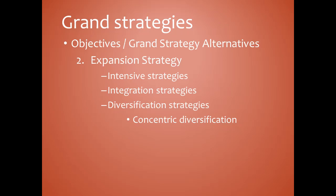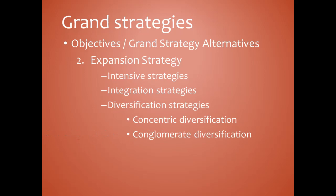In diversification, there are two types. First, concentric diversification: adding new but related businesses. It involves acquisition of businesses that are related to the acquiring firm's technology. Second, conglomerate diversification: adding new but unrelated businesses. So for concentric it is related; for conglomerate it is unrelated.